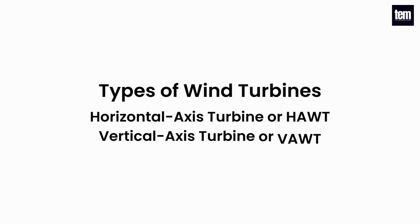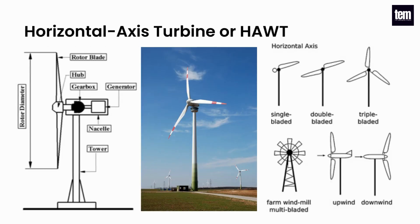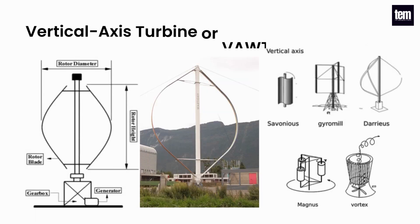Two basic types of wind turbines are horizontal axis turbines and vertical axis turbines. The axis of rotation of a horizontal axis wind turbine is parallel to the flow of the airstream. It is the most successful type of wind turbine and is most widely used worldwide. The axis of rotation of a vertical axis wind turbine and the flow of the airstream are perpendicular to each other. It is also known as a crosswind axis turbine.